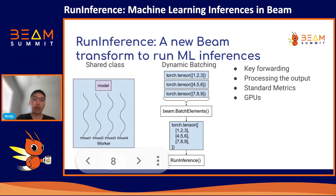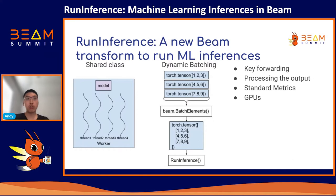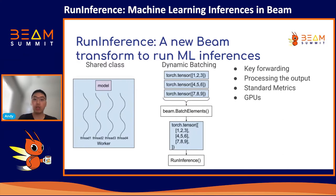We also implemented dynamic batching under the hood for Run Inference. To take advantage of the optimizations of vectorized inferences that many models implement, we added the existing Beam.BatchElements transform as an intermediate step before making the actual prediction for the model. This transforms batches of elements together, and these batch elements are then applied with a transformation for the particular framework. For example, for NumPy arrays we call NumPy.Stack, and for Torch tensor elements we call Torch.Stack. Other features include key forwarding, processing the output into a standard data class, producing standard metrics relevant to ML inferences, and support for GPUs.